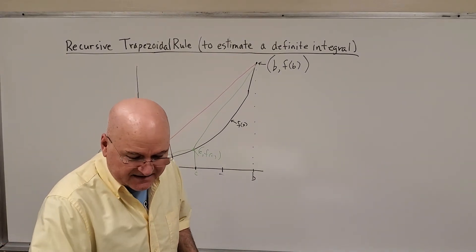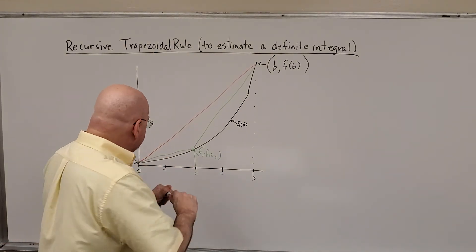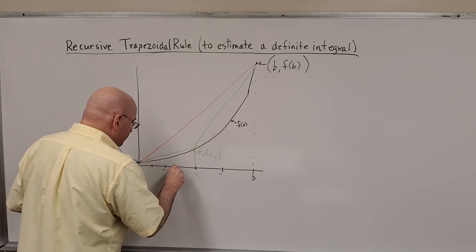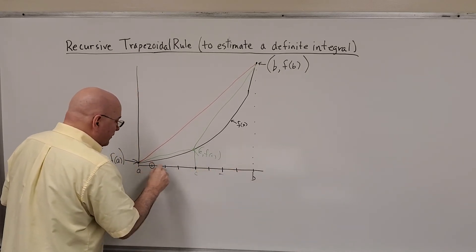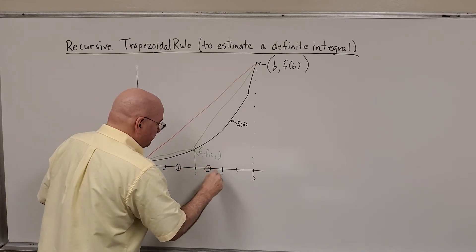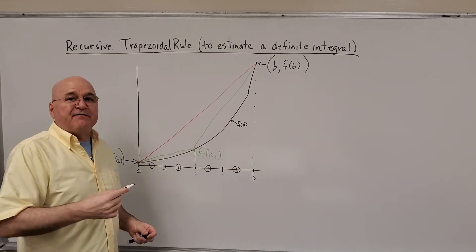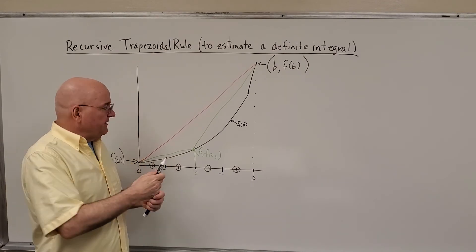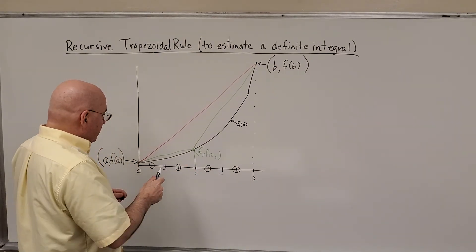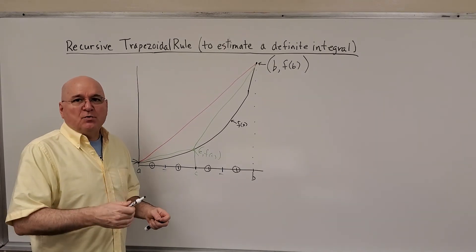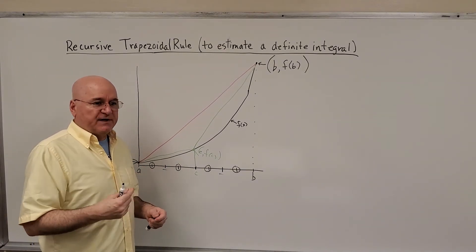And then when we double that to get to eight, we only added four new intervals, or I should say four new data points. We doubled the number of sections in the interval, and therefore we don't have to do all of the processing over and over again.